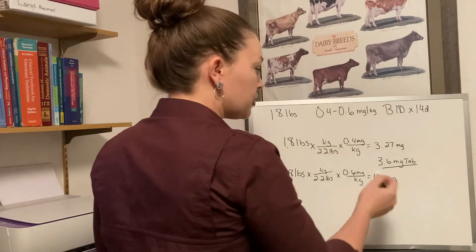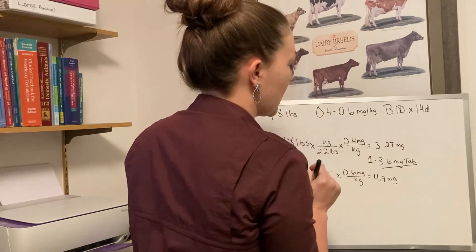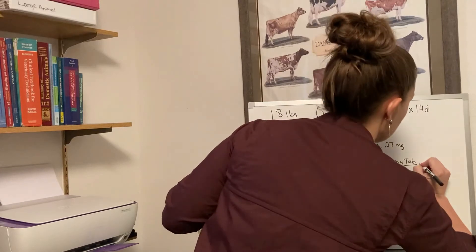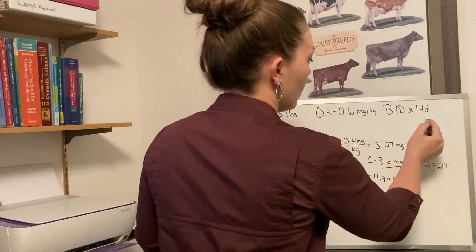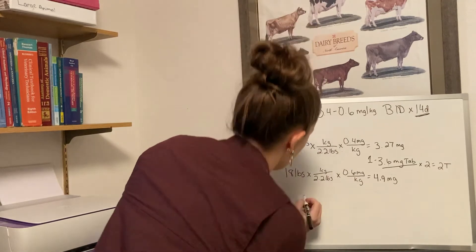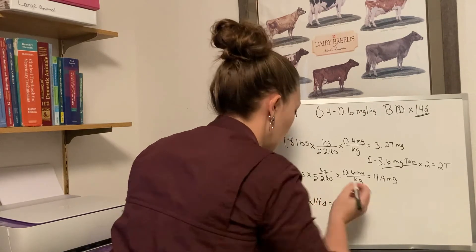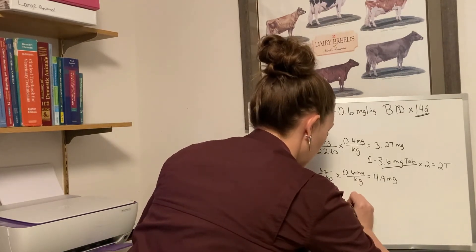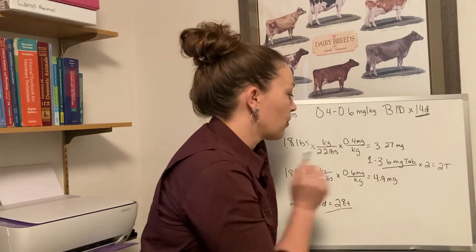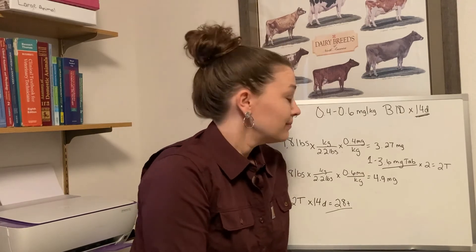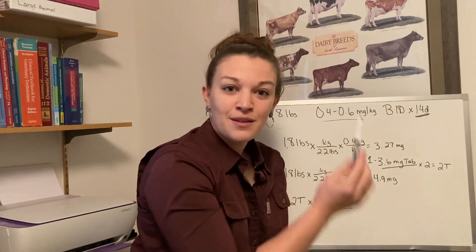So our 18-pound patient's dose is one 3.6 mg tablet. We're doing this twice daily, so one full tablet times two equals two full tablets each day. We need to do this for 14 days: two tablets times 14 days equals 28. We need to grab 28 of our 3.6 mg tablets to dispense to our client. That's a quick breakdown on figuring out dosage ranges and following the directions to count it out for clients.